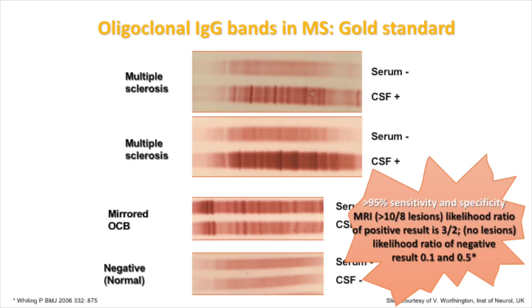In terms of our armamentarium for MS, the best thing developed almost a century or two ago was the oligoclonal band test. What does it actually look like? You see at the bottom panel the normal — the blood on top and the spinal fluid at the bottom — with no bands, just a smear, indicating no presence of antibodies.